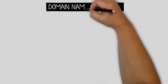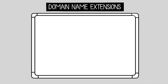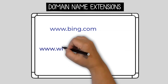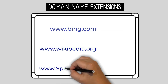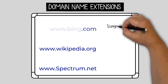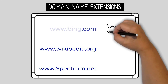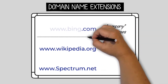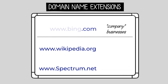Domain names always have an extension at the end. The most common ones are .com, .org, and .net. There are a lot of other lesser-known extensions that can also be used. .com was originally short for 'company' and was mostly used for businesses. It is now commonly used for a variety of types of websites, so it is acceptable to use the .com extension for most websites.